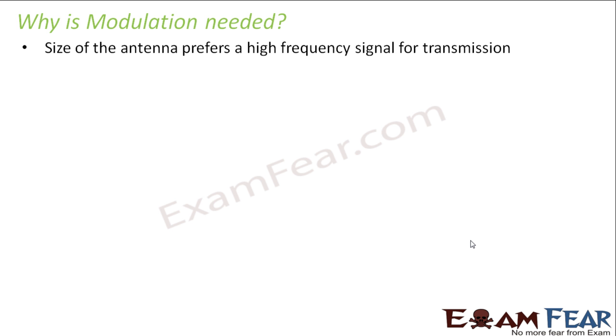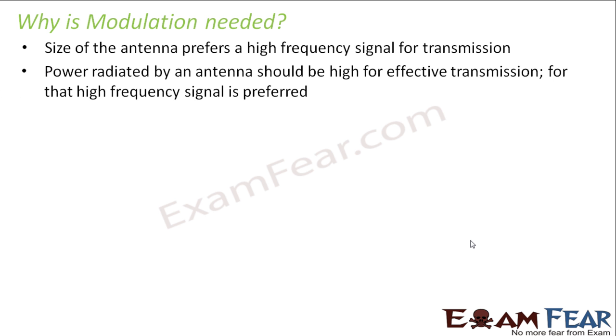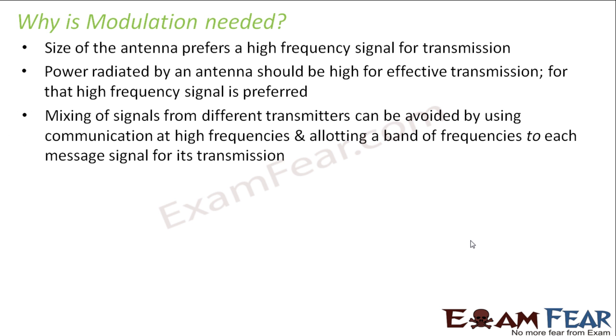Because the size of the antenna prefers a high frequency signal for transmission, power radiated by an antenna should be high for effective transmission. For that, high frequency signal is preferred. Mixing of signals from different transmitters can be avoided by using communication at high frequencies and allotting a band of frequencies to each message signal for its transmission. I have discussed each of them in detail before.